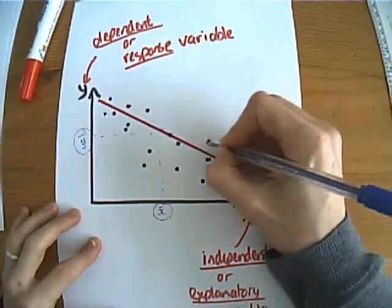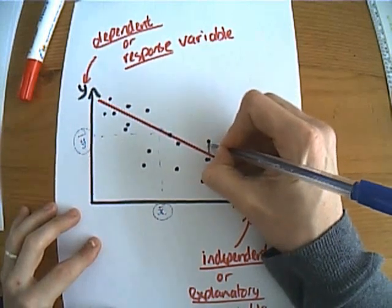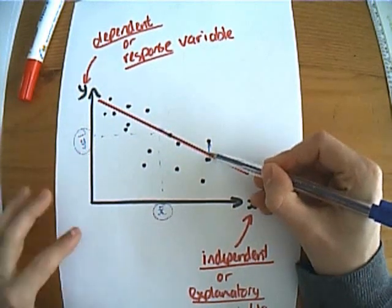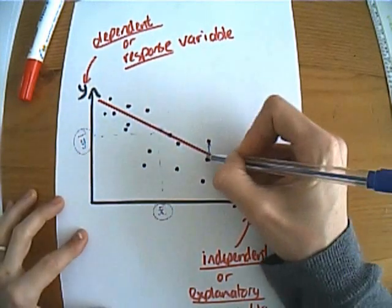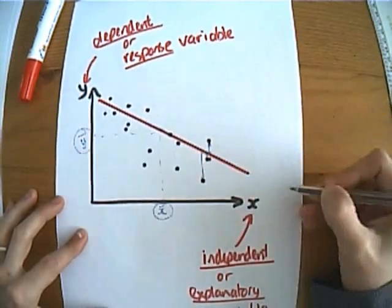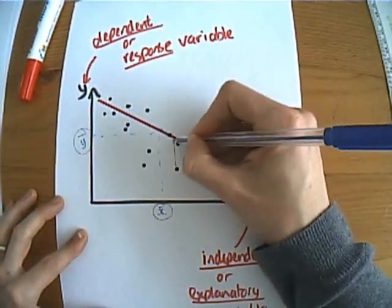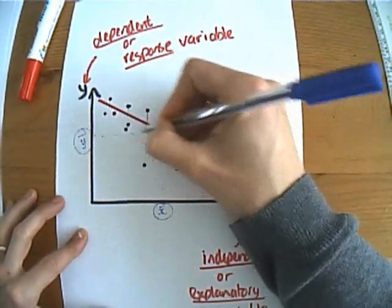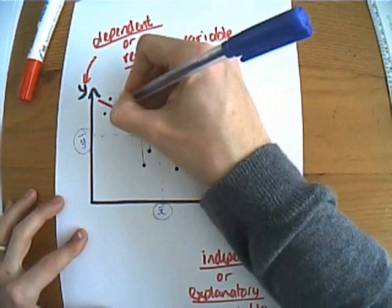First thing you need to do is, let's take a look at this point here. Can you see that this point is actually quite a way off the line of best fit? There's an error in there. There's also an error for this point, it's not quite on the line of best fit and there's an error here and there's an error here and there's an error here. Can you see all these points are actually off the line of best fit?